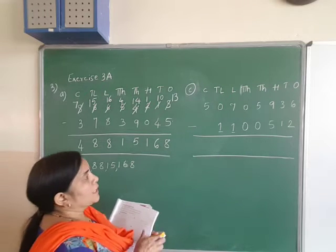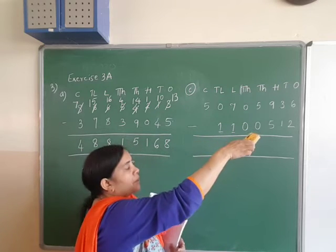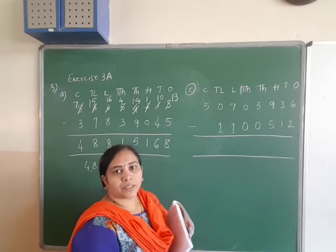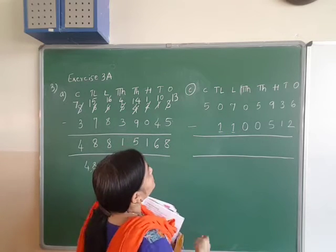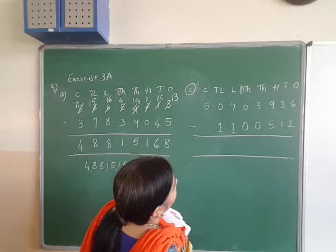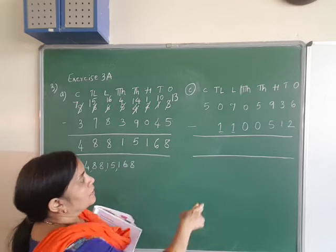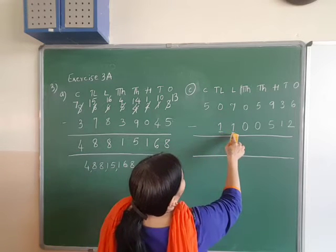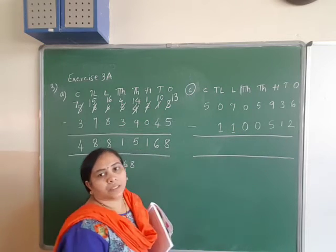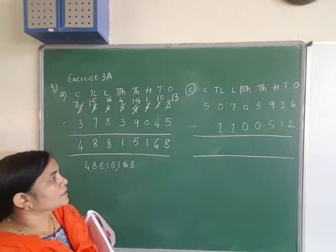Next, C — the numbers are already given in the textbook. This number reads as 5,07,59,36 and the second number is 11,11,512. These two numbers you have to subtract.